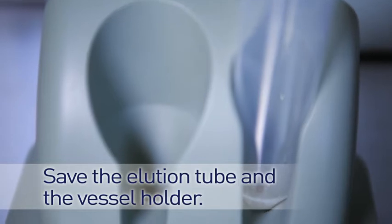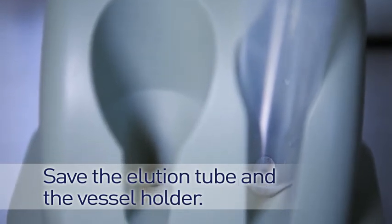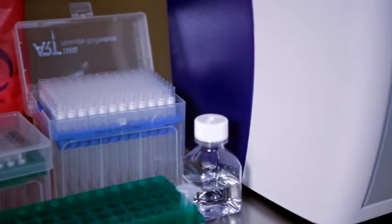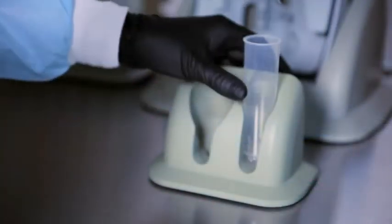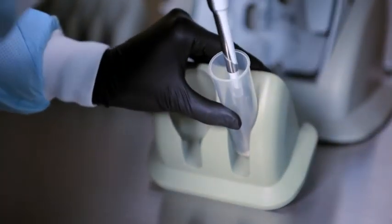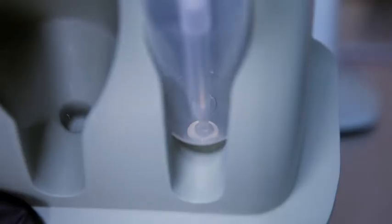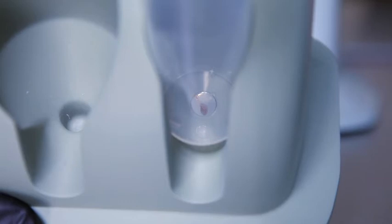Save the elution tube and the vessel holder. The elution tube holds the auto beads and the holder is where the magnets are located. To re-suspend the beads, leave the elution tube in the holder and use a pipette to remove any remaining PBS wash buffer. Be very careful not to displace any beads from the magnet.